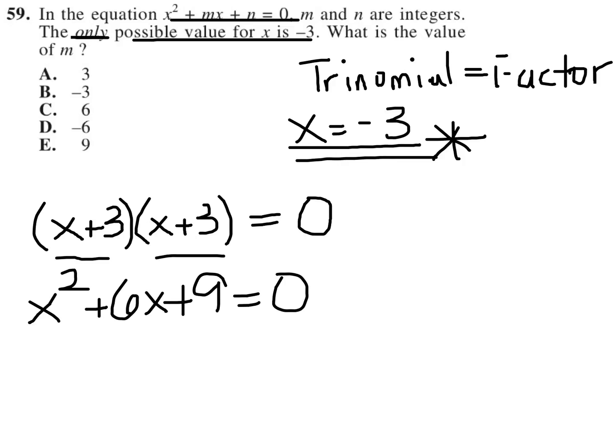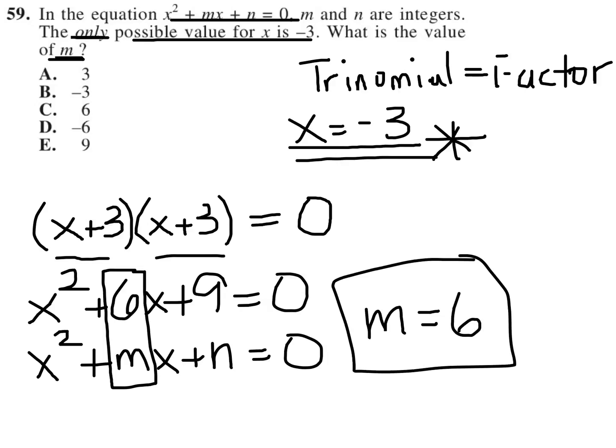And then when I match that up with the original question, x squared plus mx plus n equals 0, since the question is asking for m, well, m must be 6 in order for this question to truly work. And therefore, my answer is C.